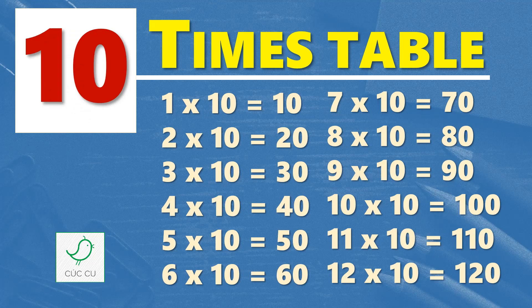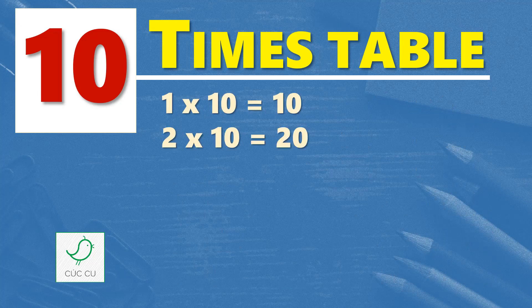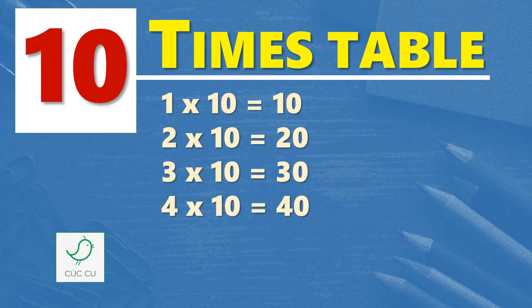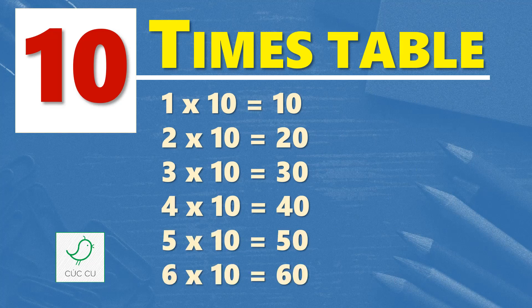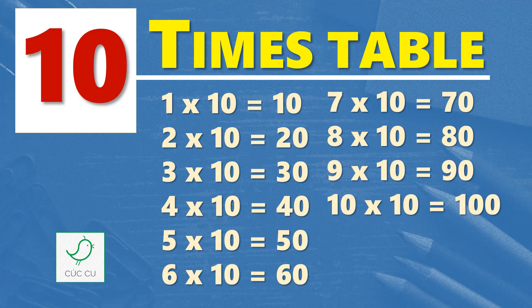Multiplication table of 10. 10 times table. 1 times 10 is 10, 2 times 10 is 20, 3 times 10 is 30, 4 times 10 is 40, 5 times 10 is 50, 6 times 10 is 60, 7 times 10 is 70, 8 times 10 is 80, 9 times 10 is 90, 10 times 10 is 100, 11 times 10 is 110.